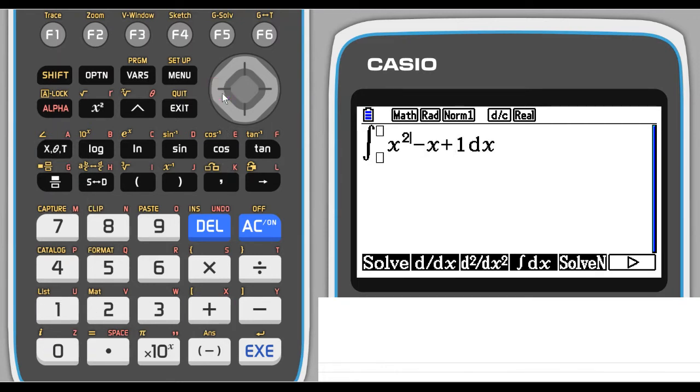Then we need to put our limits in. So let's go back to the limits. It was a limit of 3 at the top, and we're using the cursor pad to move around here, and 1 at the bottom. So that was the problem we had. Notice we don't need to put the parentheses, the brackets in.